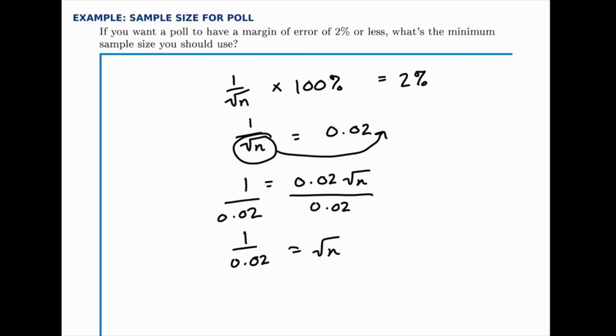Now there's a shortcut to this. At this step, you could say we have 1 over the square root of n equals 0.02. You can actually flip both sides of that equation upside down and get square root of n over 1 equals 1 over 0.02, which gets you to the same place, just by a shortcut. Don't get too lost in that step if that doesn't make sense, but there are shortcuts to some of this algebra.